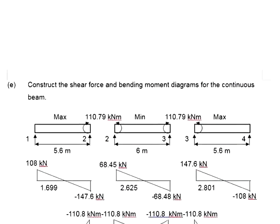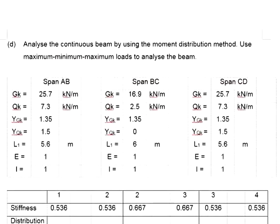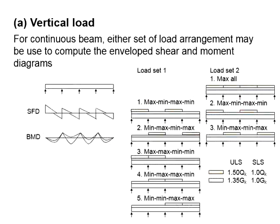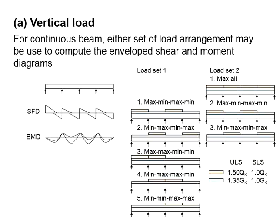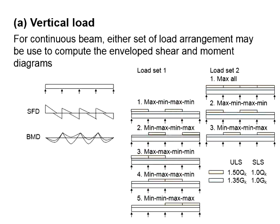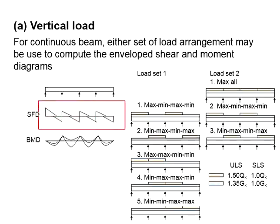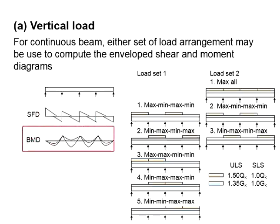Bear in mind that this example only deals with one load case — maximum, minimum, maximum. You will need to repeat the moment distribution process and work out the shear force diagram for all other load cases. For a typical three-span continuous beam, if using load set 2 there will be three load cases; if using load set 1, you will need at least four load cases. Once you have the shear force and bending moment diagrams for each load case, overlay them all to obtain the envelope shear force and bending moment diagrams.